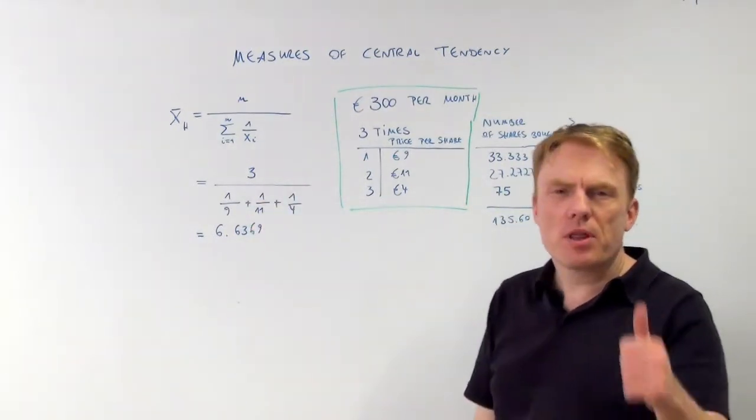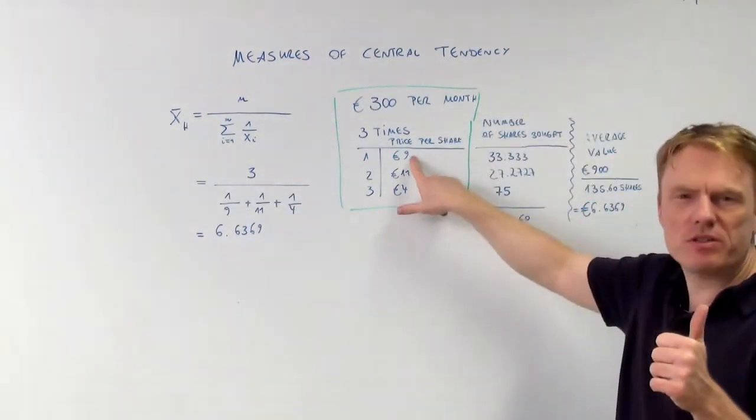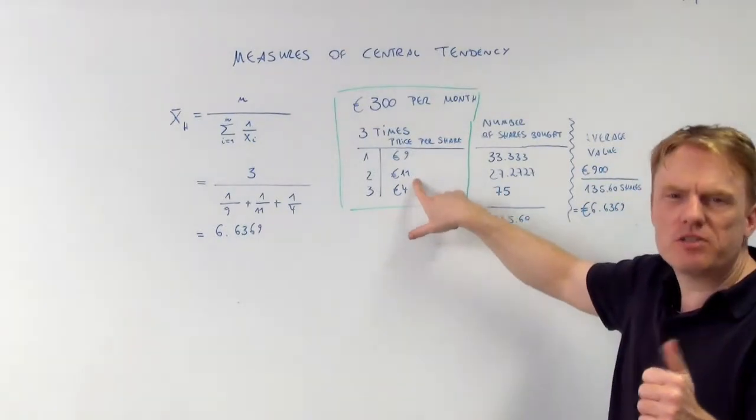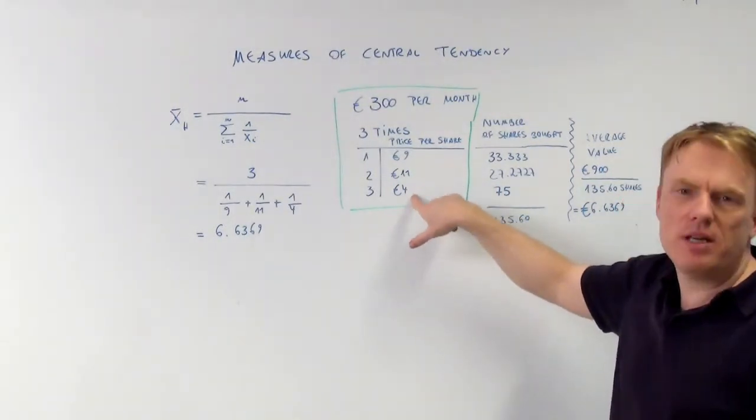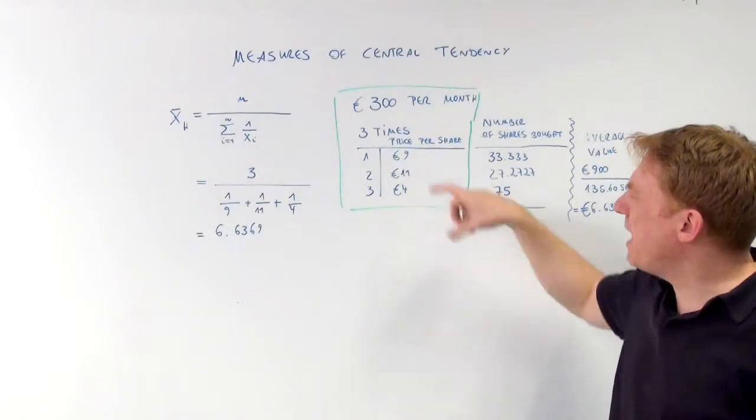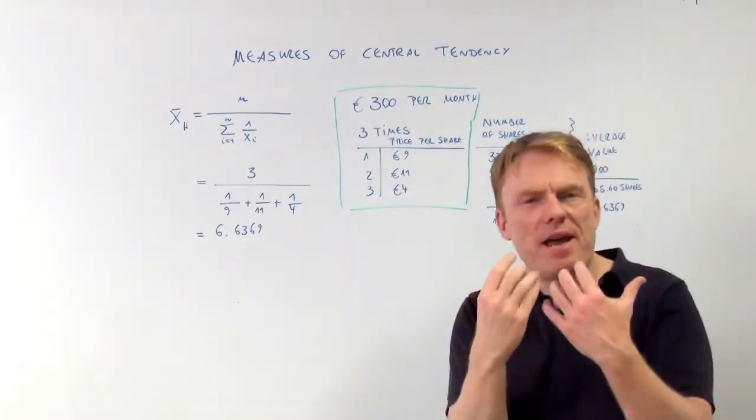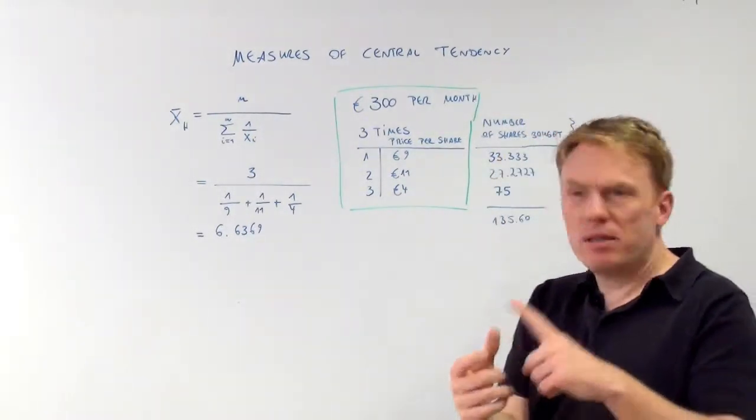The harmonic mean. We have three prices. X1 is 9 euros, X2 is 11 euros, X3 is 4 euros. So we have to calculate an average value between 9, 11, and 4.